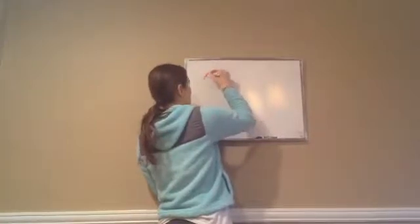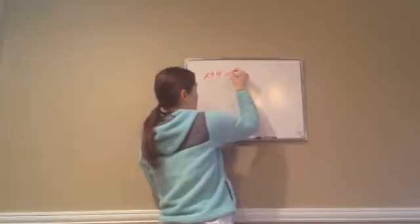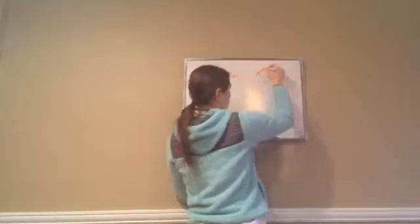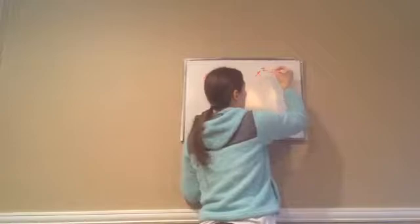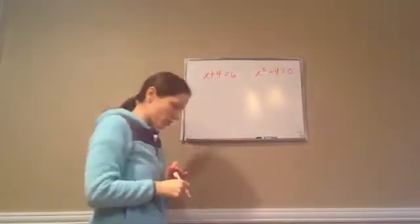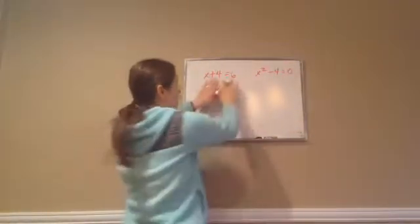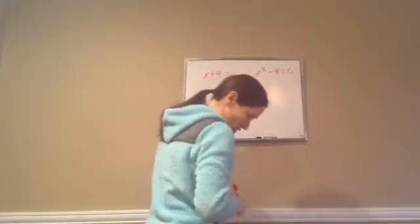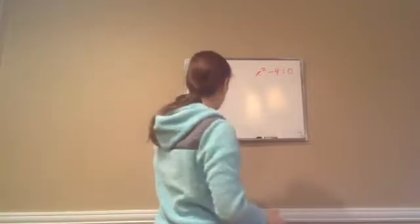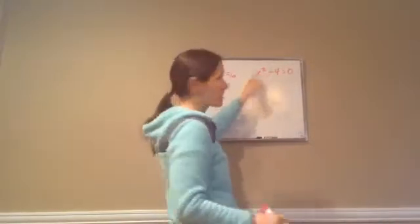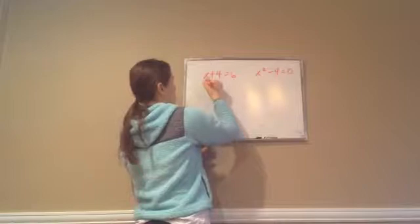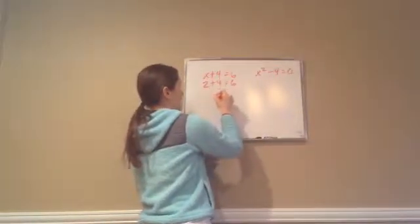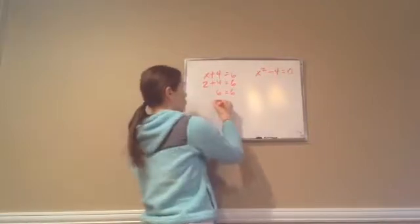So, for example, if you see x plus 4 — you don't even have to take notes or anything, just watch for a minute. x plus 4 equals 6, and then let's say x squared minus 4 equals 0. Basically what we're trying to do is determine: are these equivalent equations? So we're going to start off by putting a 2 where the x is.